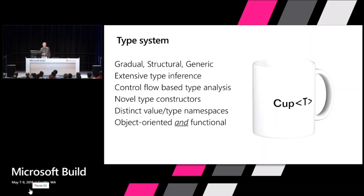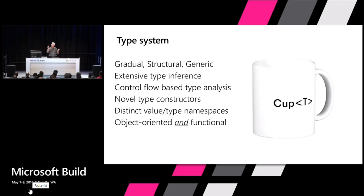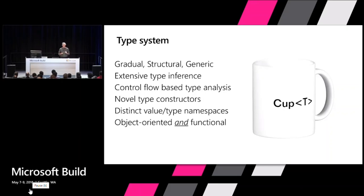The type system is structural as opposed to nominal type systems like C# or Java. In those nominal type systems, when you have a base class and a derived class, you can only assign a derived to a base if it explicitly says that it extends that base class. And likewise, you can only be treated as an interface if you explicitly say that you implement that interface.